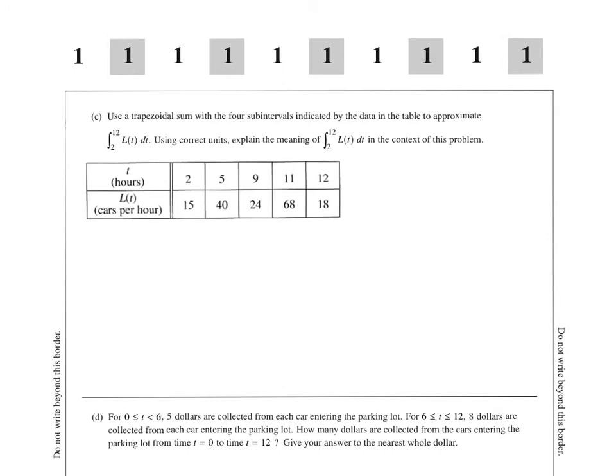Part C asks us to use a trapezoidal sum with four subintervals. When I see four, I think one, two, three, four, from two to 12, that sounds good, because we've got from two to 12, that's all of my data. Using correct units, then we've got to explain what that means.